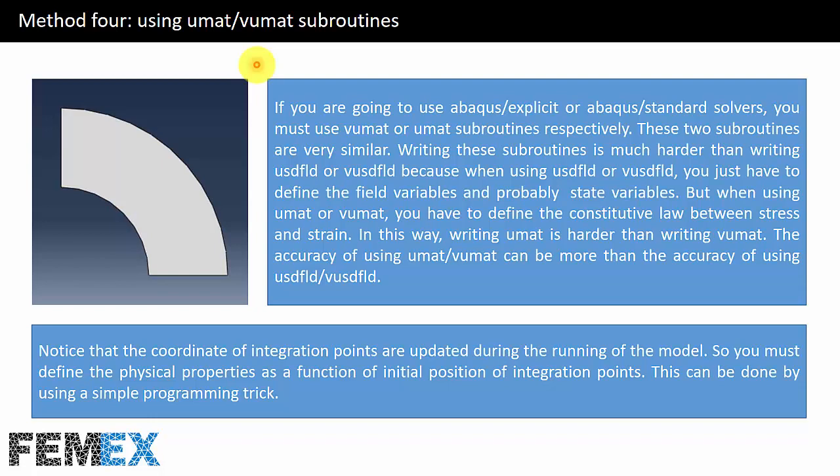The accuracy of using UMAT or VUMAT can be more than the accuracy of using USDFLD or VUSDFLD. Notice that the coordinates of integration points are updated during the running of the model, so you must define the physical properties as a function of the initial position of integration points. This can be done by using a simple programming trick: you must use state variables because they have memory and from one increment to the next increment they can save and memorize their value. You must use them for this simple programming trick.